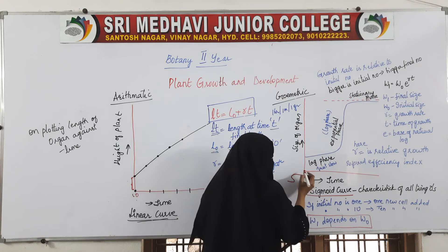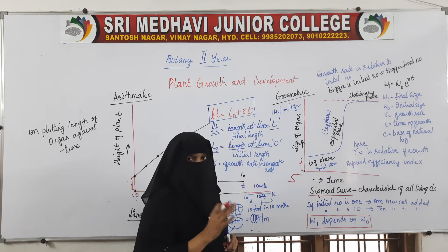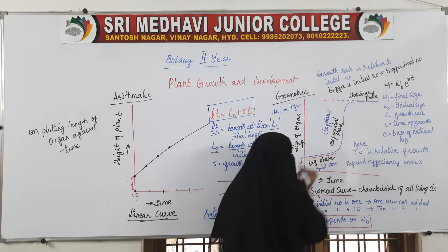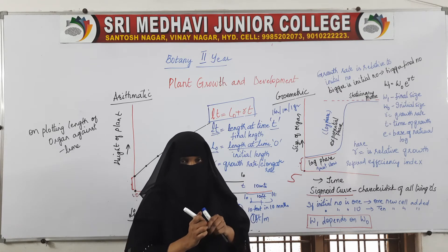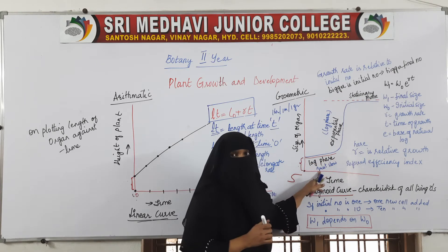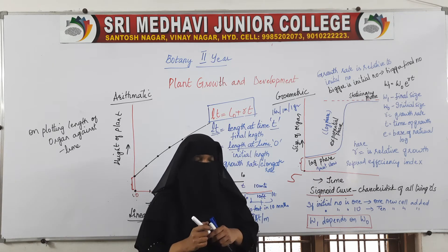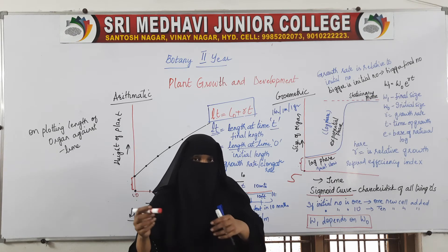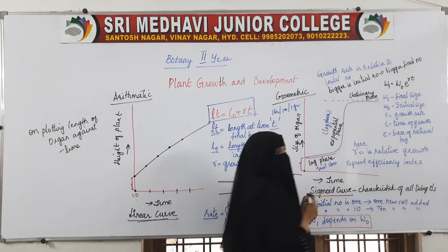At first, the increase was slow — that slow phase is called the lag phase. Then, rapid increase in cell number takes place because large numbers of meristematic cells have formed — from 1 to 2, 2 to 4, 4 to 8 — and so there is an exponential increase in cell number.